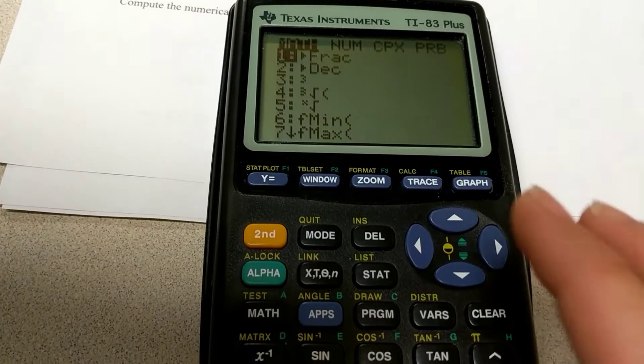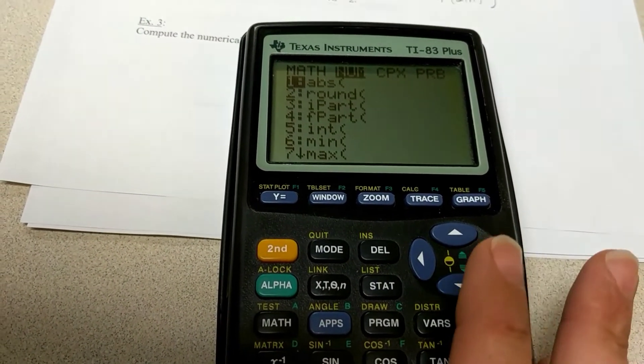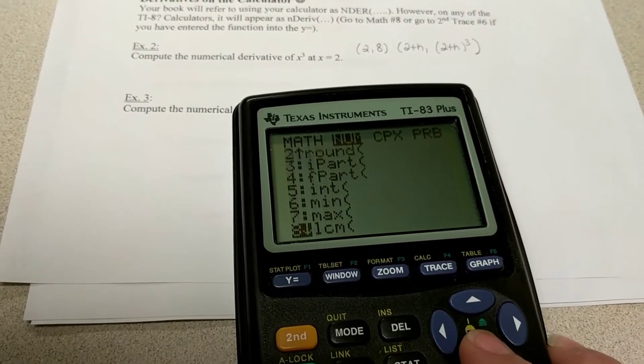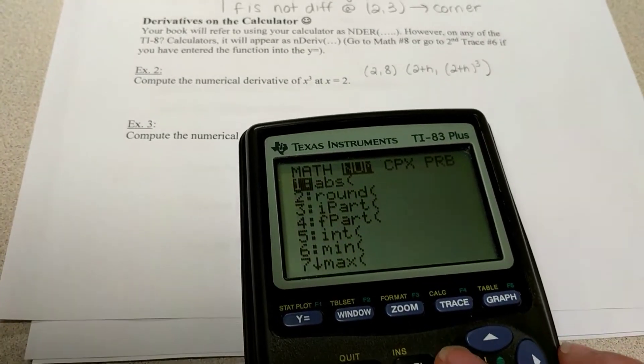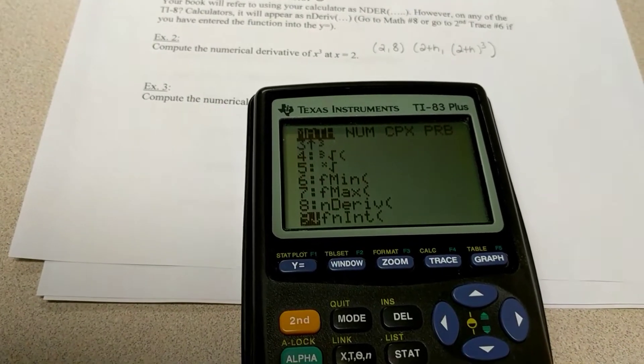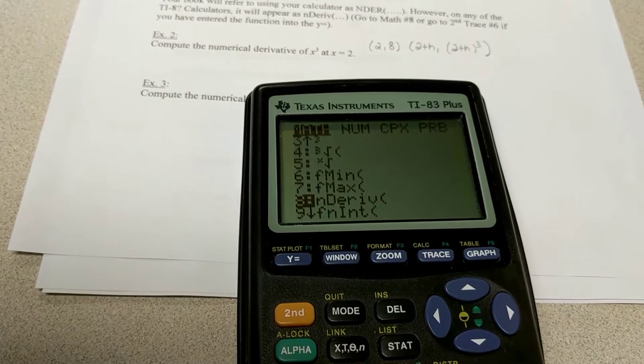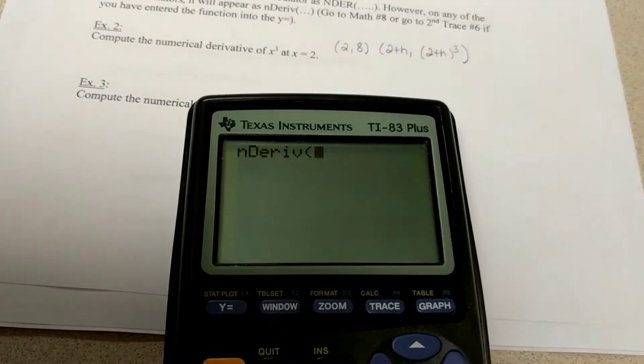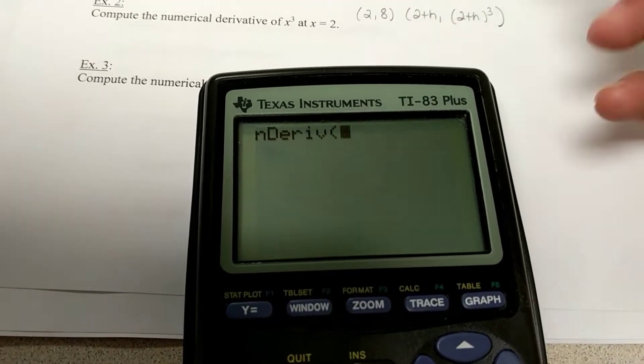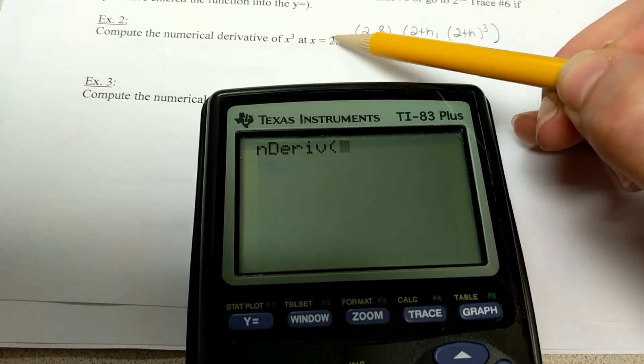So, when I push math, and I go over to number, and then it tells you to go down. I'll arrow down. Oh, just kidding, it said math. Normal math. Now, number 8, it says nDeriv. So, number 8 is the one I'm going to choose. Now, I want you to notice what the calculator gives me. It gives me this weird syntax of nDeriv. So, this particular function asks me to do the function x cubed at x equals 2.